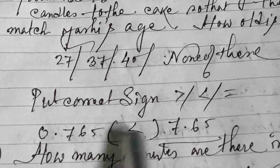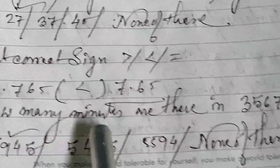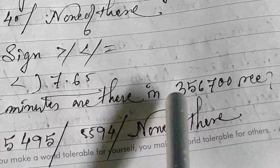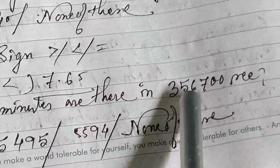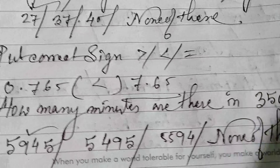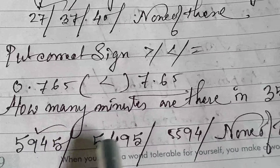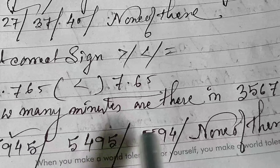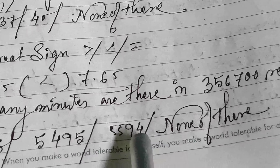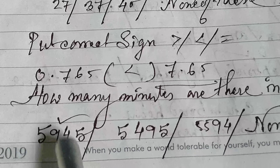Next: put the correct sign. The sign option mein rahega and you will put the right option. Compare 0.765 and 7.65. Look at the decimal — 0 is the whole number whereas 7 is the whole number. Obviously 7 is greater than 0, that's why it is the lesser-than sign.